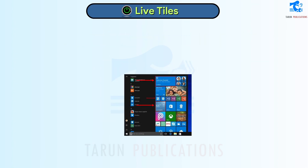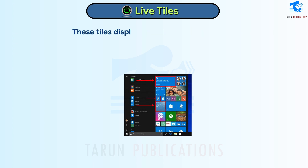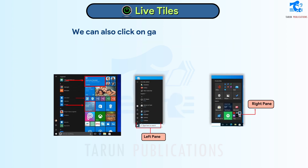Live Tiles. Shortcuts of applications are called Live Tiles. These tiles display information such as Weather, News, Calendar, and Email Messages. We can also click on Game Tiles to play games.